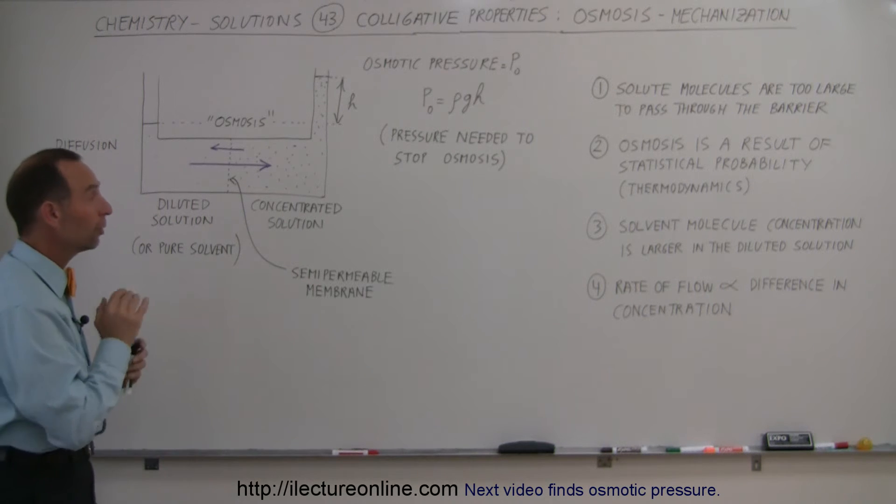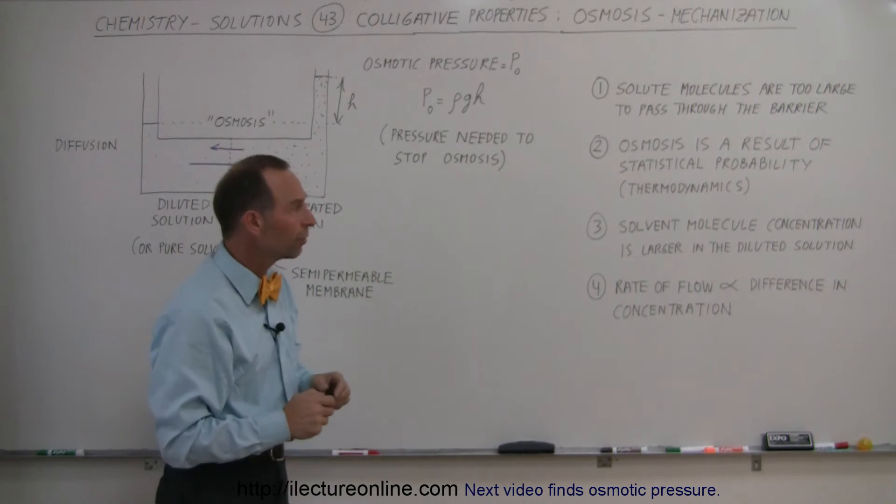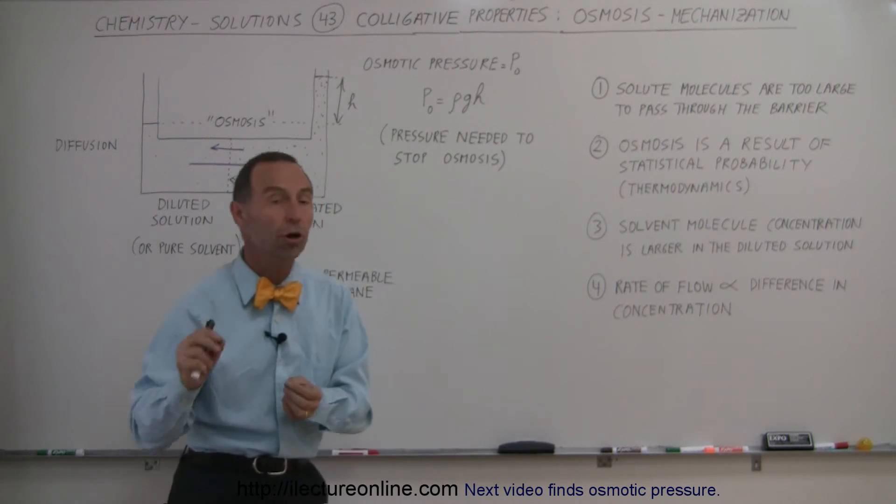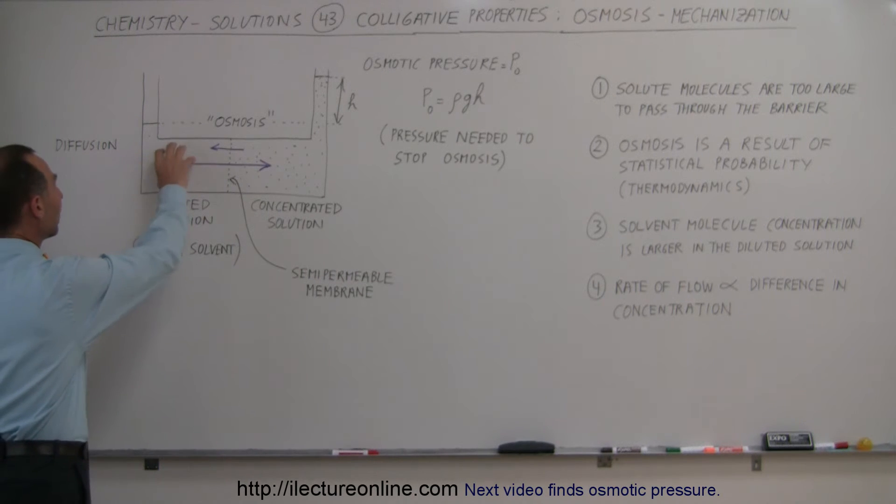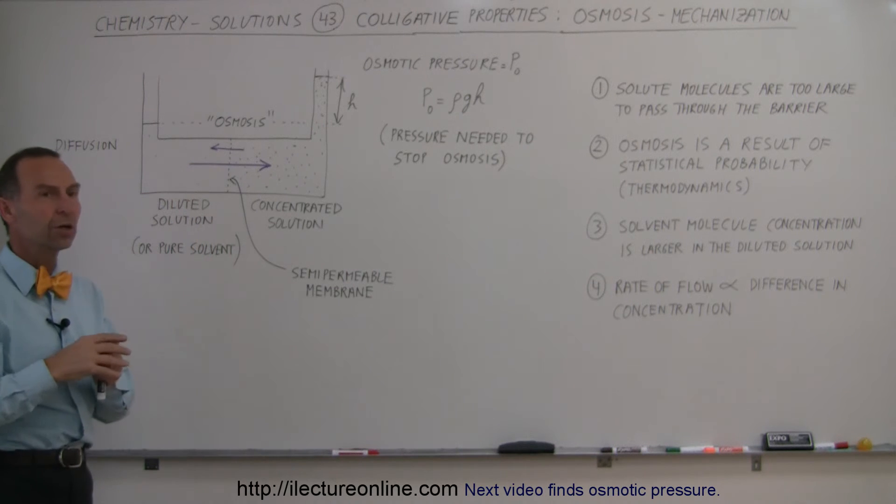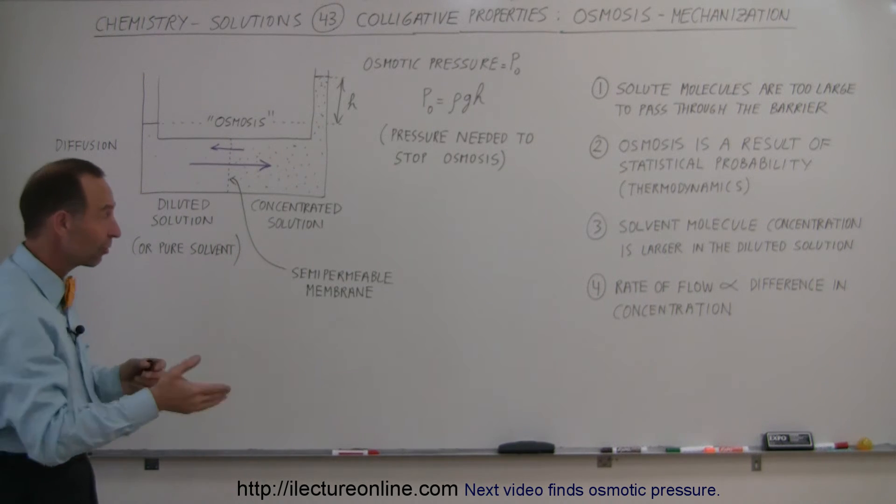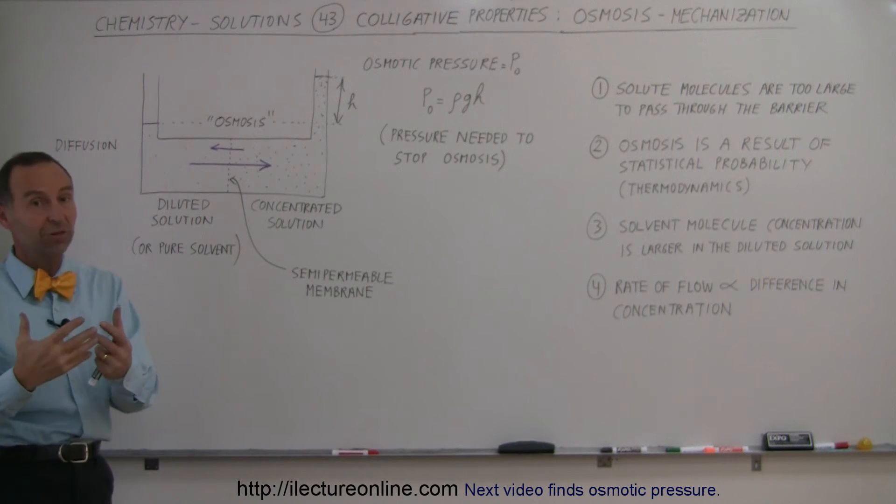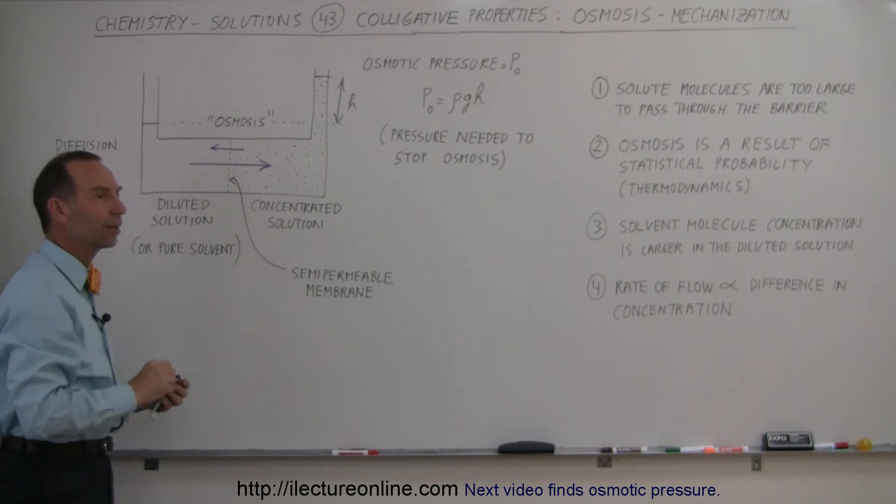Now, thirdly, notice that the solvent molecule concentration is larger on the diluted side of the solution. In the diluted solution here, you have a greater number or greater concentration of solvent molecules. There's a lower concentration of solute molecules, which causes there to be a greater concentration of solvent molecules on the left side than the right side.